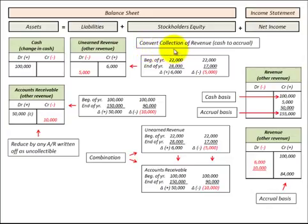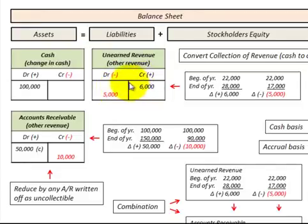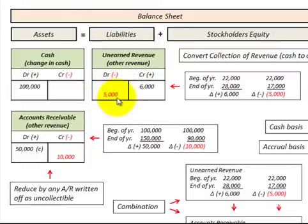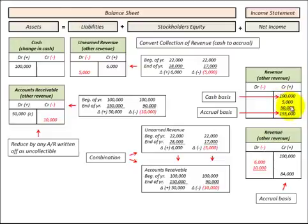In summary, when converting from a cash basis to an accrual basis, we use our unearned revenue account — a liability on the balance sheet — and accounts receivable — an asset on the balance sheet — and look for any changes in those accounts for the period. If the change was an increase, we increase the account by that amount; if a decrease, we decrease it. We then balance any increases or decreases in unearned revenue and accounts receivable against the revenue account on the income statement. The sum total of the cash basis adjusted for those changes gives us our accrual basis.